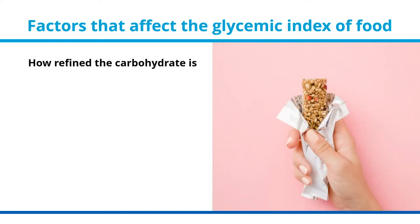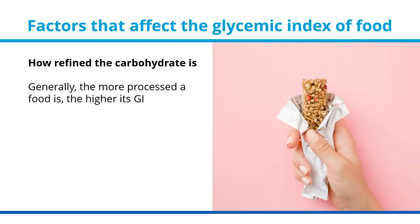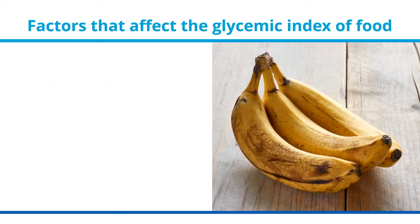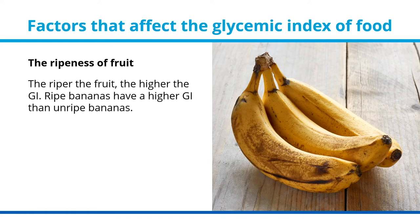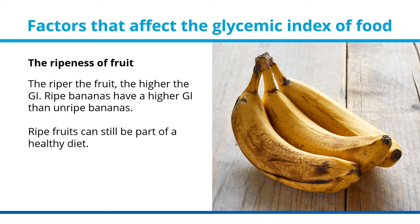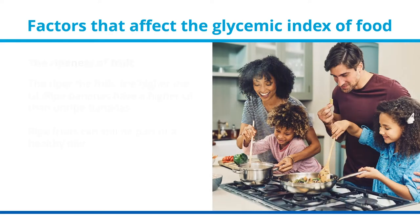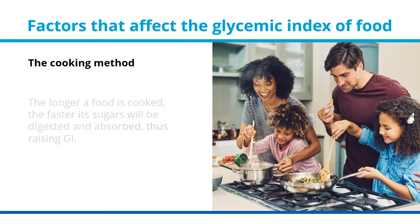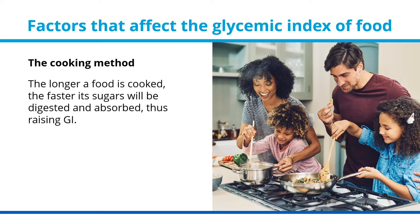Another factor is how refined the carbohydrate is — generally, the more processed a food is, the higher its GI. The ripeness of fruit also matters: the riper the fruit, the higher the GI. For example, ripe bananas have a higher GI than unripe bananas, though ripe fruits can still be part of a healthy diet.